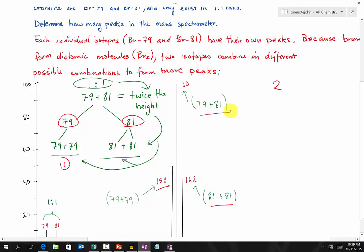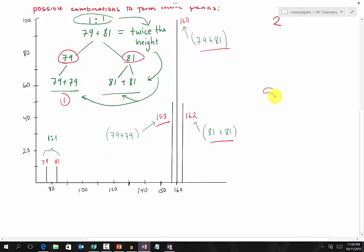One unique property is that because bromine-79 and bromine-81 exist in a 1 to 1 ratio, when they combine together, they would have twice the height in their peak compared to 81 and 81, or 79 and 79. So this gives us a total of five peaks.